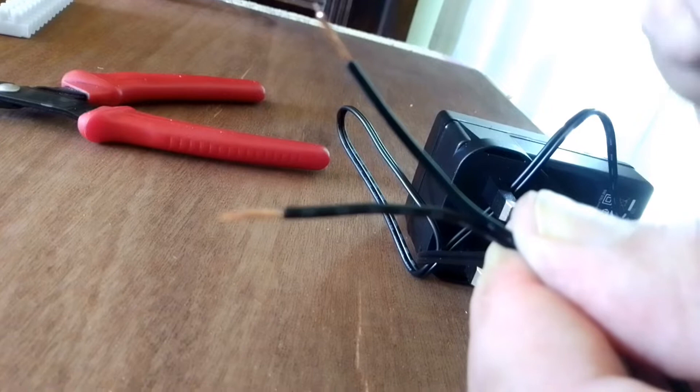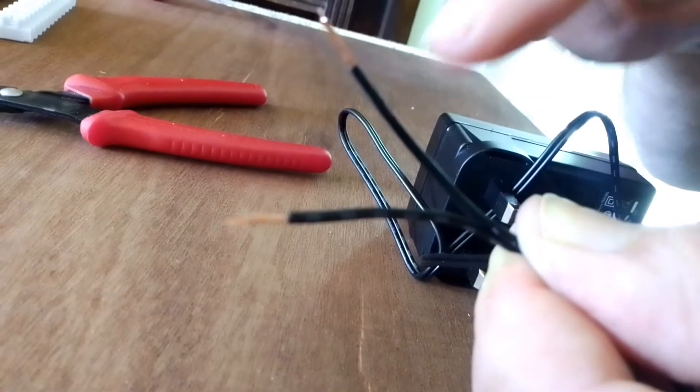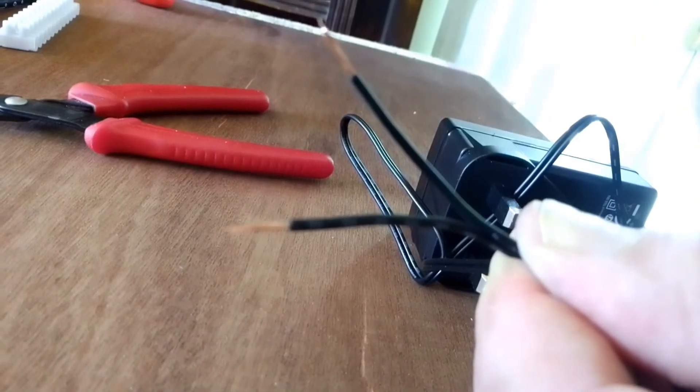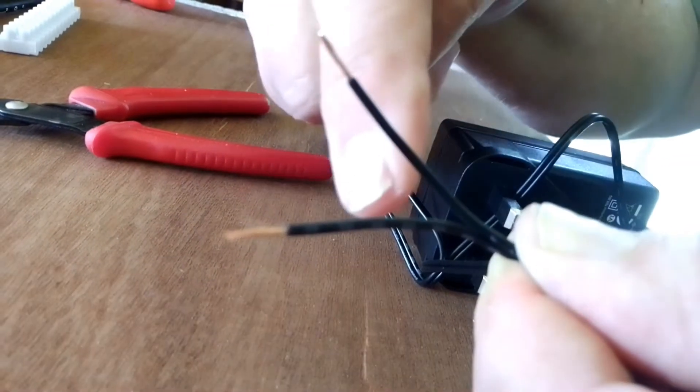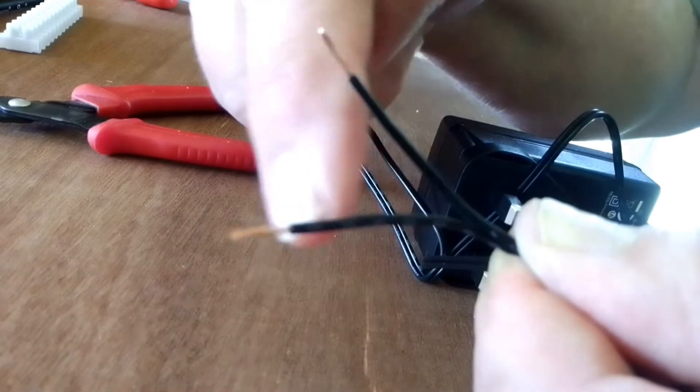As it's a DC power supply, one of these wires will be positive and one will be negative. Usually, but I wouldn't guarantee they always do it, they mark the positive wire with little white dashes or a white stripe.